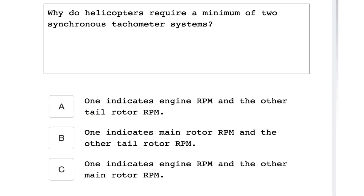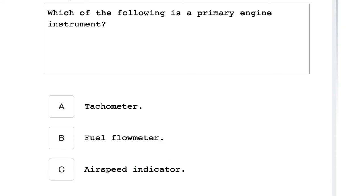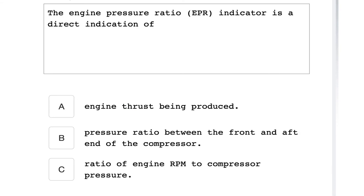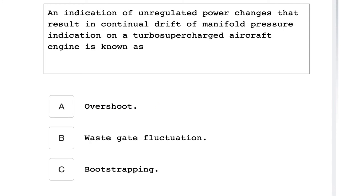Why do helicopters require a minimum of two synchronous tachometer systems? One indicates engine RPM and the other the main rotor RPM. Which of the following is a primary engine instrument? Tachometer. The engine instrument ratio indicator is a direct indication of engine thrust being produced. An indication of unregulated power changes that results in continuous drift of manifold pressure indication on a turbocharged aircraft engine is known as bootstrapping.